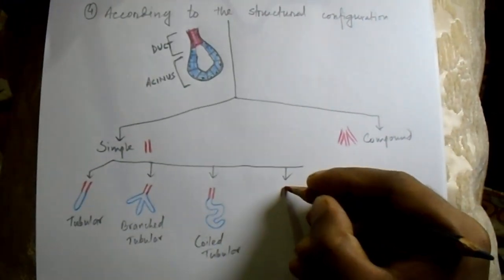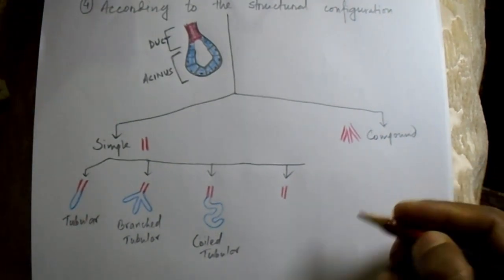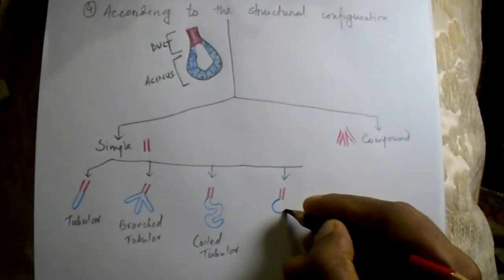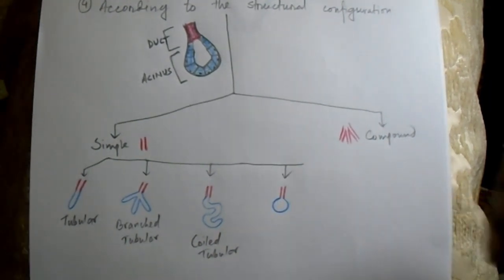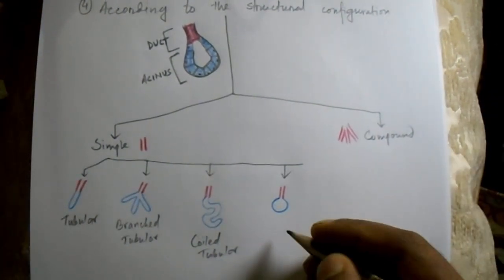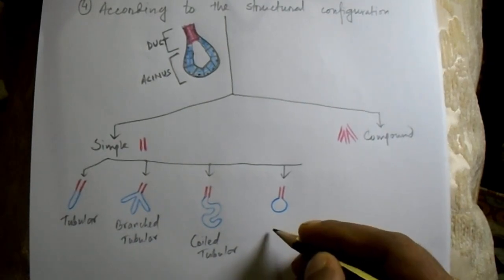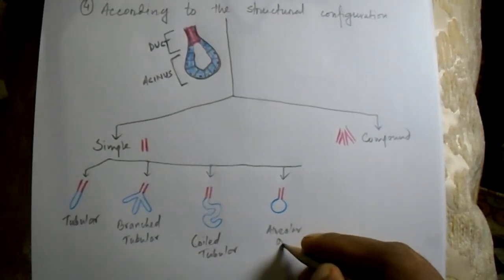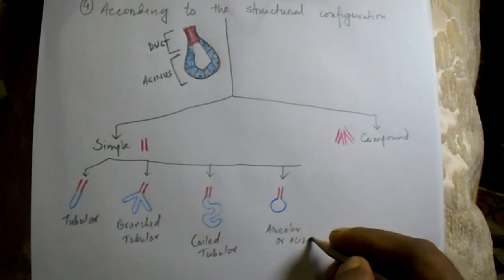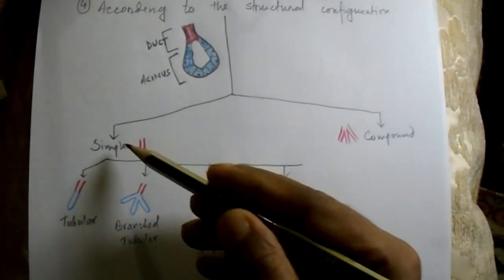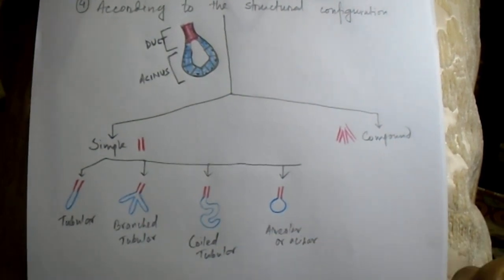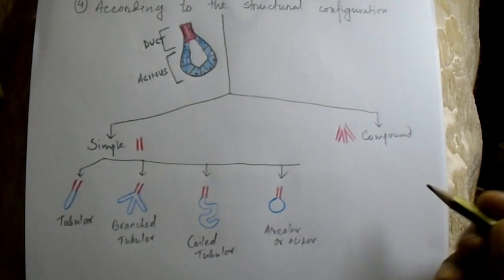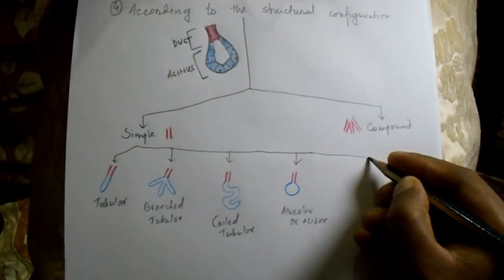Another subtype has an unbranched duct and the secretory part is alveolar or acinar in shape. This is termed simple alveolar or simple acinar gland. This gland is present in the small mucous glands along the urethra.